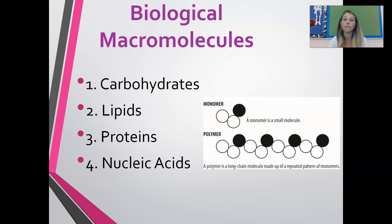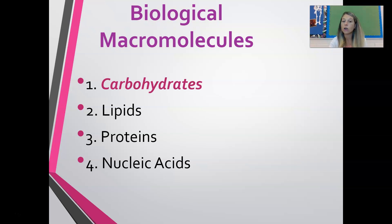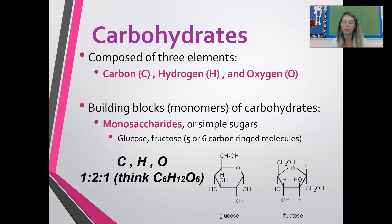Here are our four biological macromolecules: carbohydrates, lipids, proteins, and nucleic acids. Starting with carbohydrates — carbohydrates are composed of three elements. Remember: CHO, carbon, hydrogen, and oxygen, in a one-to-two-to-one ratio. So for every one carbon, there are two hydrogens and one oxygen. Think about glucose, which is a carbohydrate: C6H12O6 — that's a one-to-two-to-one ratio.